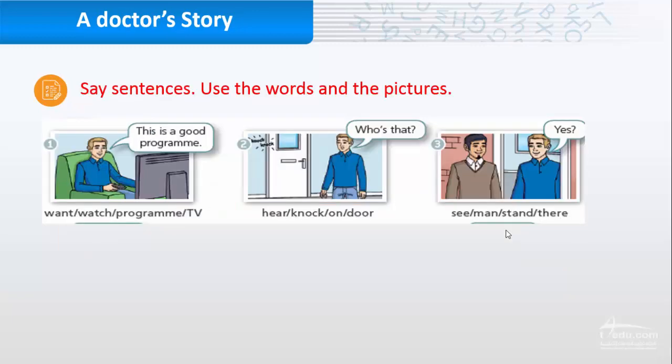Now I want you to say the sentences using the words and the pictures. For example, number one: This is a good program. Want, watch, program, TV. So the answer is Jack wanted to watch a film on TV. See, so we have two verbs, the word but between them there is to, then the basic form of the verb. The second one: knock on door. Jack heard someone knocking on the door. See, so we have verb, then the verb two is with an -ing.